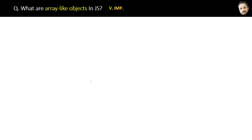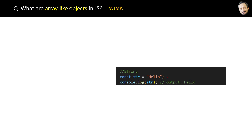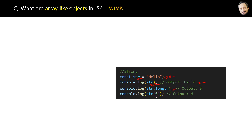What are array-like objects in JavaScript? This is a very important and often misunderstood concept. For example, in this piece of code we are assigning a string to a variable str, logging it, logging str.length, and logging the first element using index zero. The string behaves like an array because it has length and index access, but this string is not an array — so what is it? We call this an array-like object.